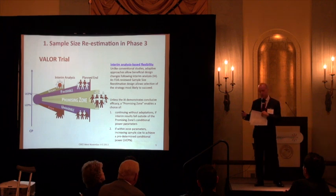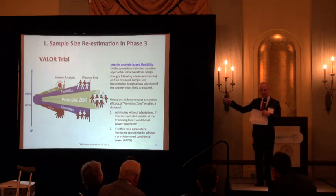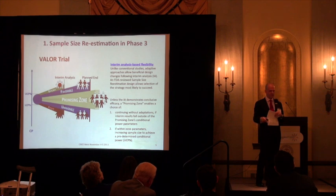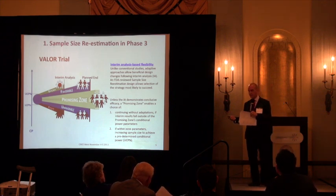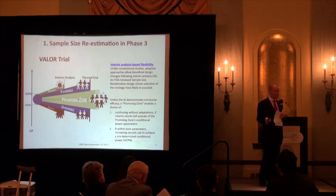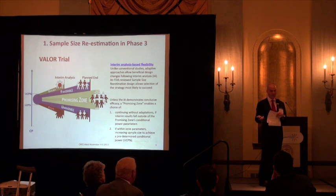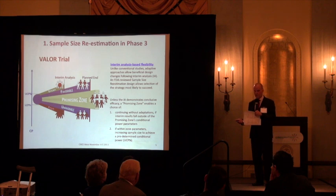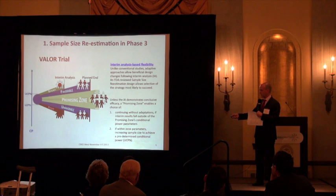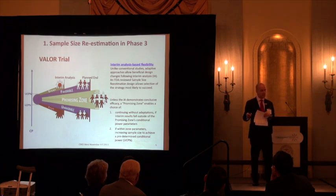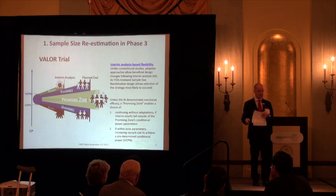If you design this study from scratch without the adaptive design, the sample size is over 800 patients, and there's no way a small company of fewer than 30 people is going to raise the money to conduct a phase 3 study of 800 patients in acute myeloid leukemia. My CFO, Eric Bierkolt, was very smart: we would fund up to a certain point, then put contingent funding in place tied to the sample size adjustment — and that's exactly what we did.